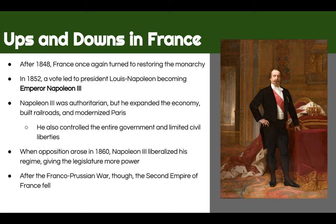France has more ups and downs. After 1848, France turned to restoring the monarchy after having spent so much time establishing a republic. In 1852, a vote led to the president, Louis Napoleon, becoming Emperor Napoleon III. He was authoritarian but did expand the economy, build railroads, and modernize the city of Paris. Around 1860, opposition arose and Napoleon III expanded some civil liberties and gave the legislature more power. But the Franco-Prussian War in 1870 caused the Second Empire of France to crumble.